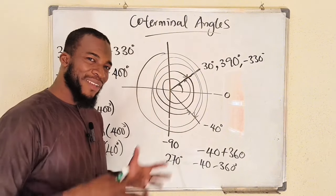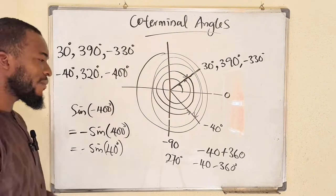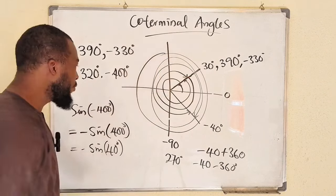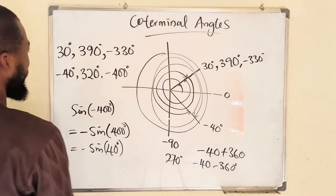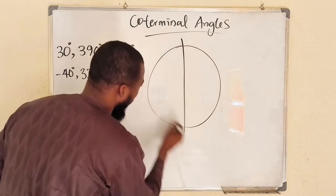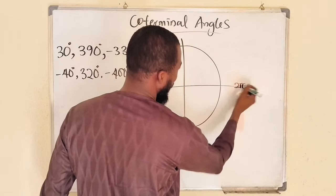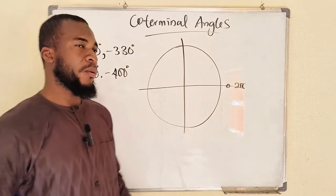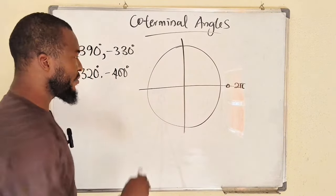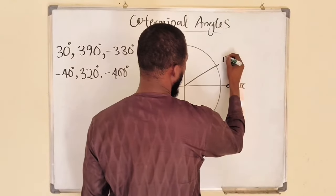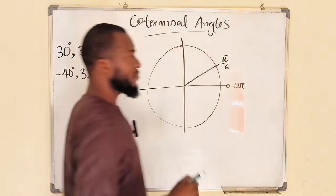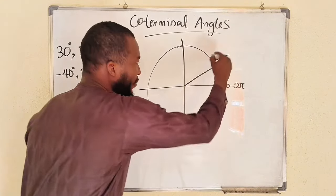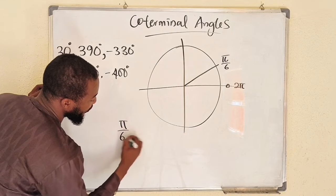This is why coterminal angles and reference angles are very important in calculating ratios of angles — not just in degrees but also in radians. Let's look at it in radians. This is our unit circle. Remember that this is 2 pi, or zero radians. Since we are talking about coterminal angles, we add or subtract 2 pi, which is 360 degrees. So if you have pi over 6, what is another coterminal angle? If you add 2 pi...